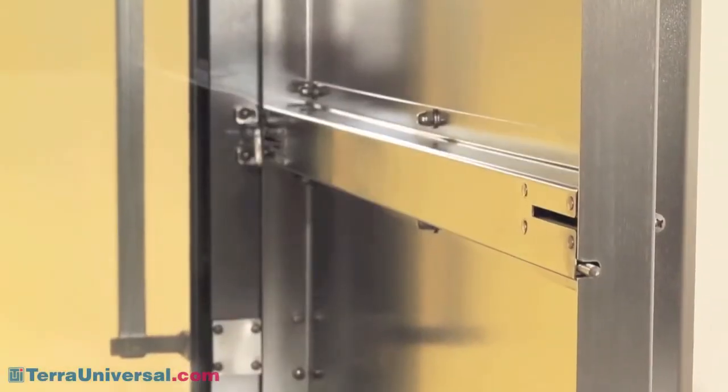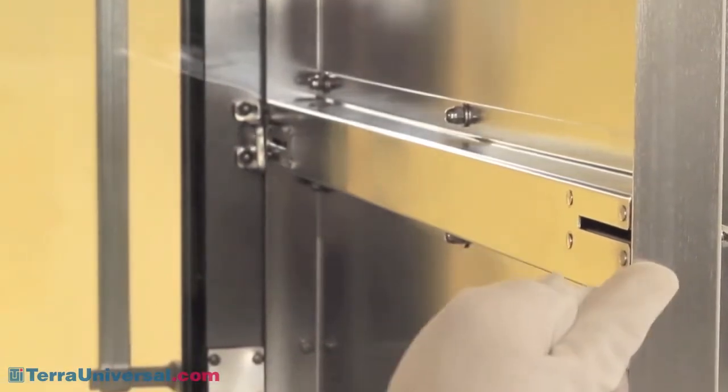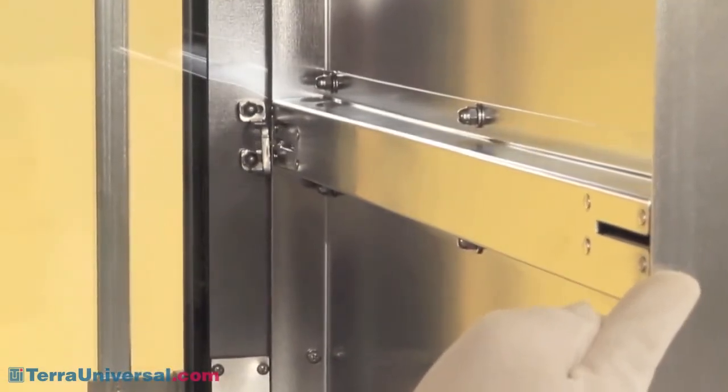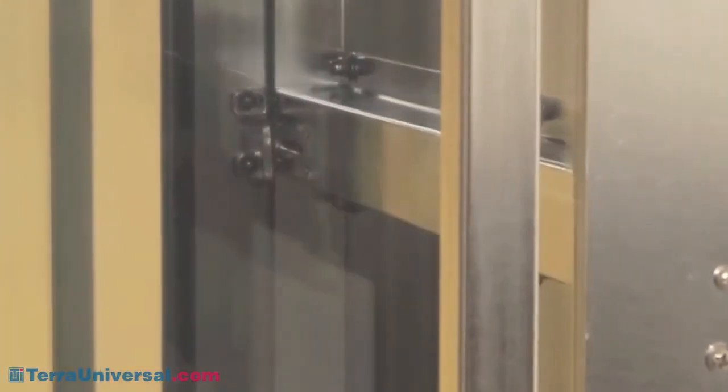Like Terra's other pass-throughs, these models feature interlocked doors that prevent cross-contamination during parts access. The heavy gauge mechanism is rated for millions of operations and resists heavy use and abuse.